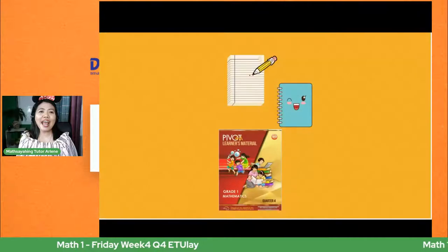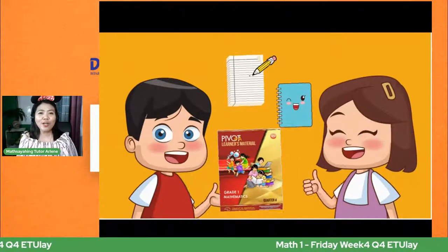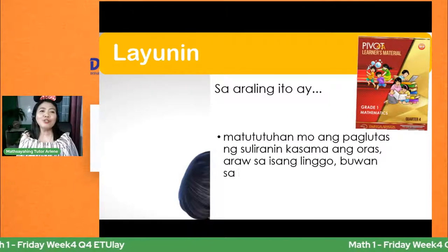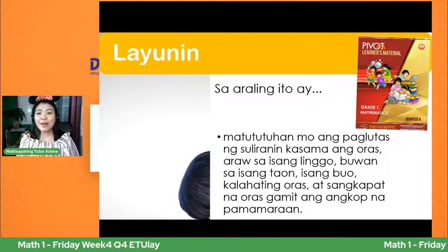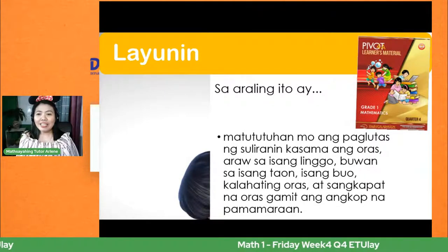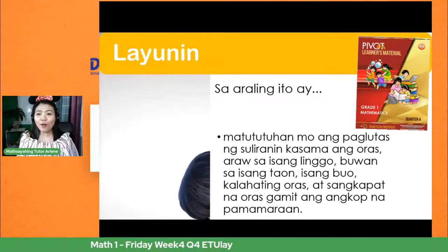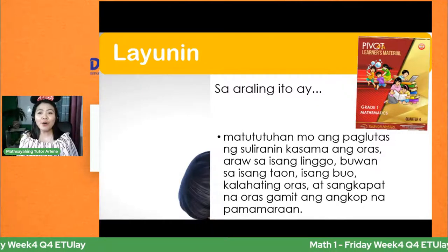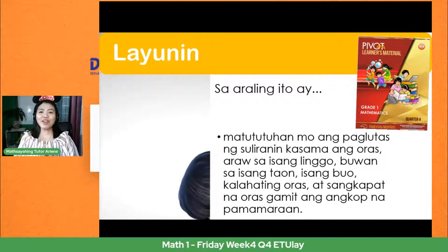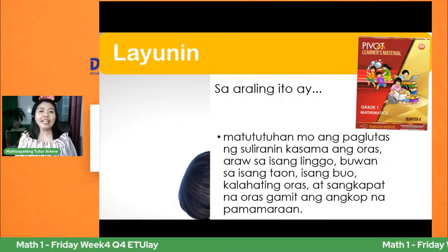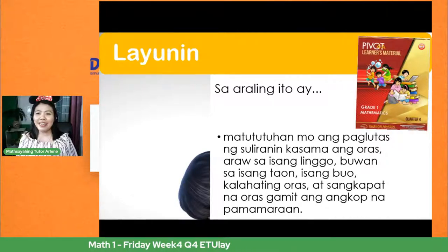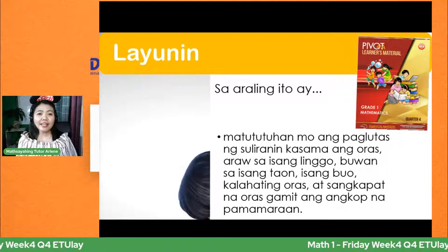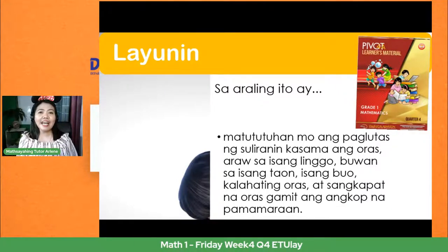Ngayon, nakahanda na ang lapis at papel, kwaderno, at ang ating self-learning module — ihanda ang ating sarili sa bagong aralin. Matututuhan mo ang paglutas ng suliranin kasama ang oras, araw sa isang linggo. Ilang araw nga sa isang linggo? Sa ating comment section — ilang araw mayroon sa loob ng isang linggo? How many days do we have in a week? Sabi ni Weng Durel ay seven po — tama! Isang buo at kalahating oras at sangkapat na oras. Naaalala nyo pa yung problem solving noong second quarter at third quarter?